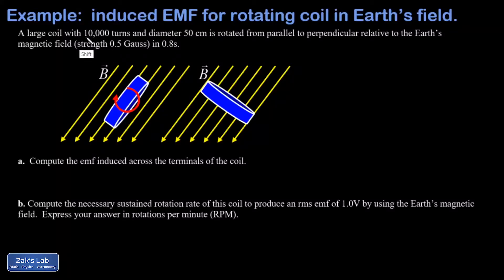In this video we're given a rather large coil. It has 10,000 turns, a diameter of 50 centimeters, and it's rotating from the coil orientation being parallel to the magnetic field to being perpendicular to the magnetic field. What we're using here to induce an EMF is actually just the magnetic field of the Earth, which is rather weak. I'm saying it's half a gauss here, and we do this 90 degree turn in 0.8 seconds.